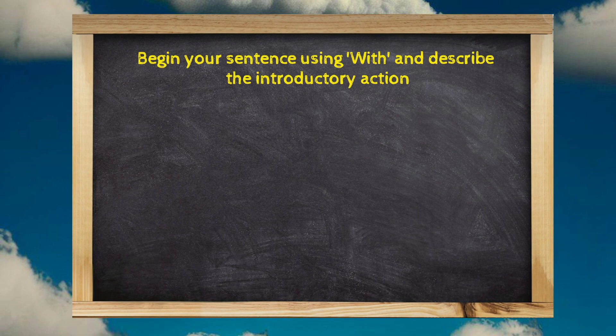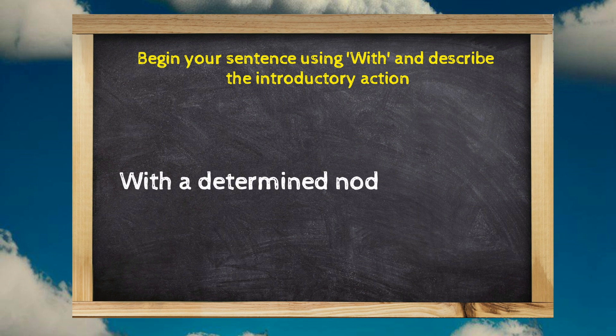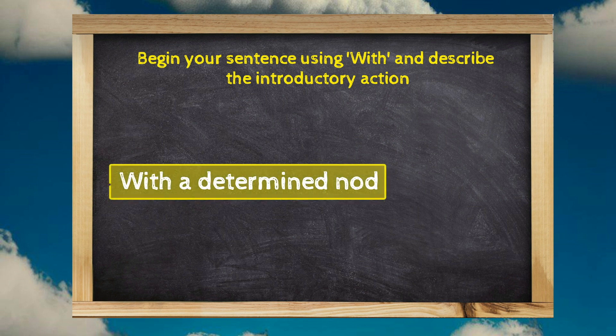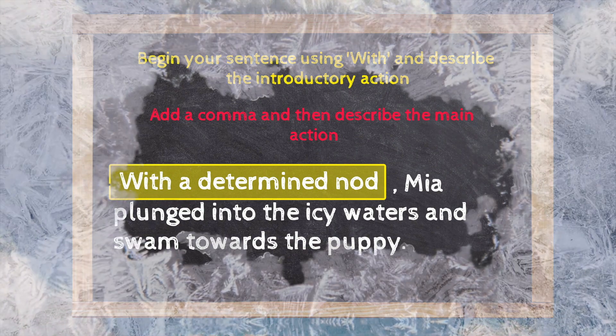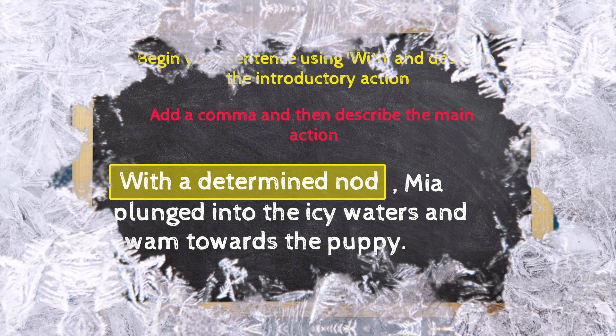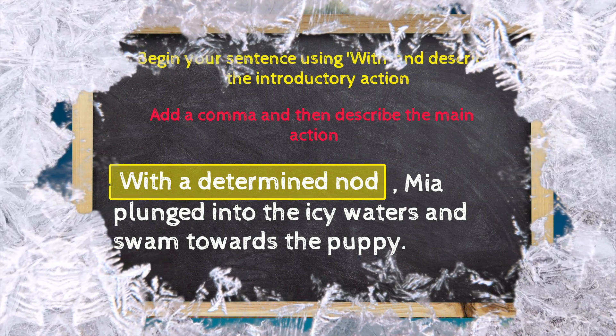Begin your sentence using WITH and describe the introductory action. With a determined nod. Add a comma and then describe the main action. Mia plunged into the icy waters and swam towards the puppy.